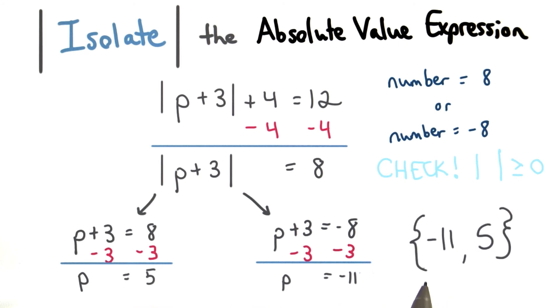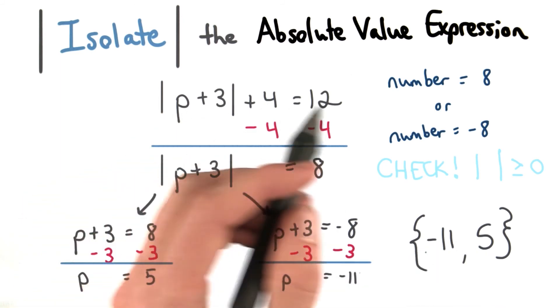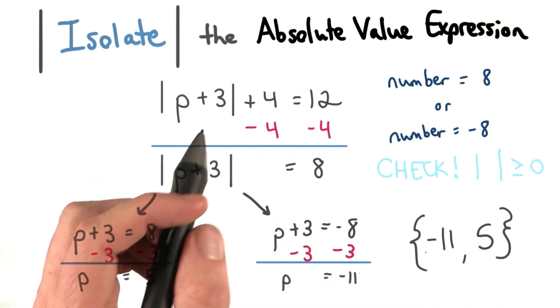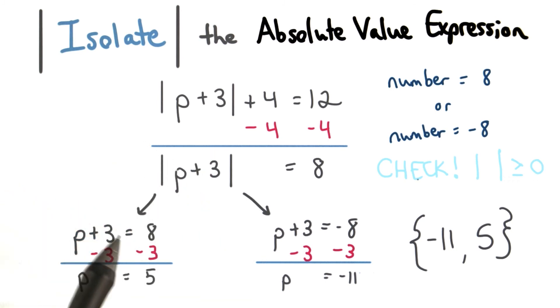So the solution set, or the values for p, are negative 11 and 5. And just like all our other equations, we can check these values in our original equation to see if we're right. That's one of the beauties of mathematics. This can help build your confidence in math. If these don't check, maybe it's a good idea to look back at your work. You might rethink your process or catch a small error.